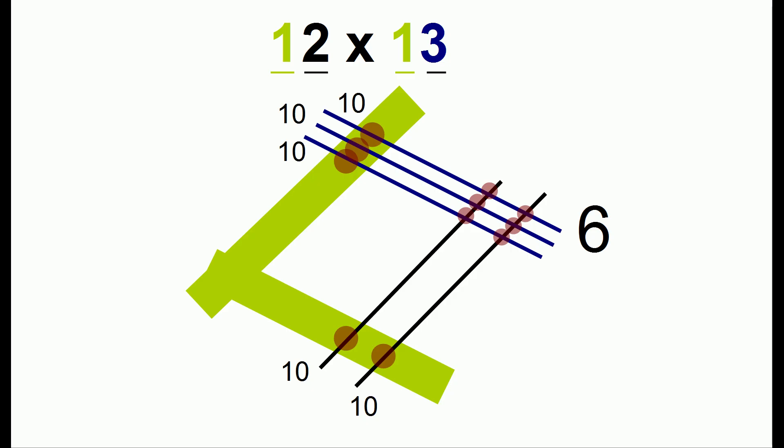So in the middle we have 10 plus 10, plus on the bottom 10 plus 10, which makes for 50.